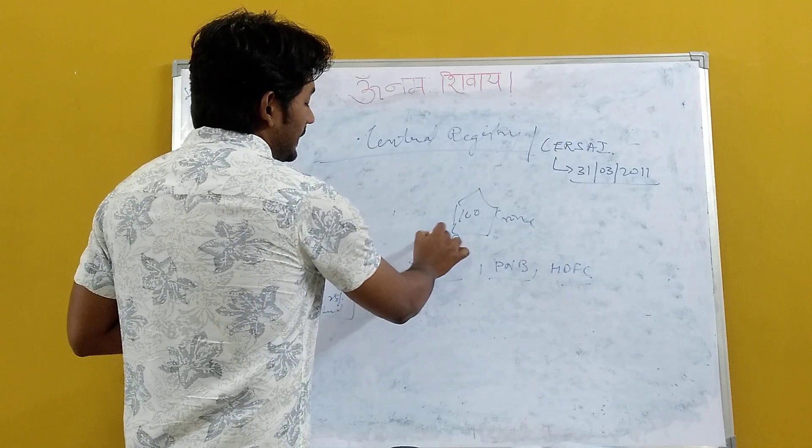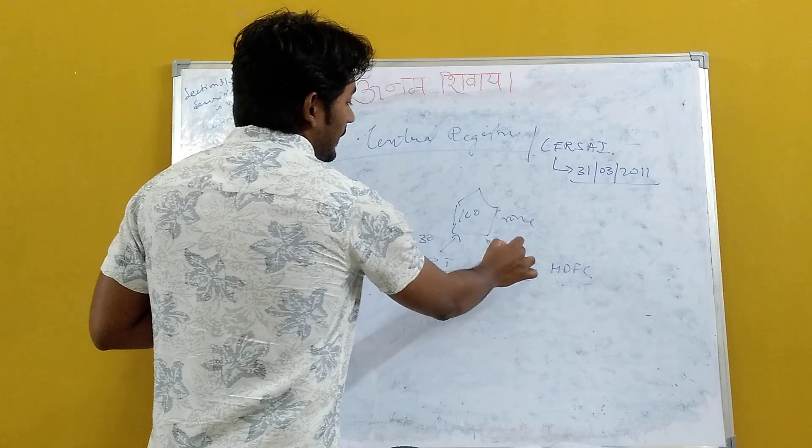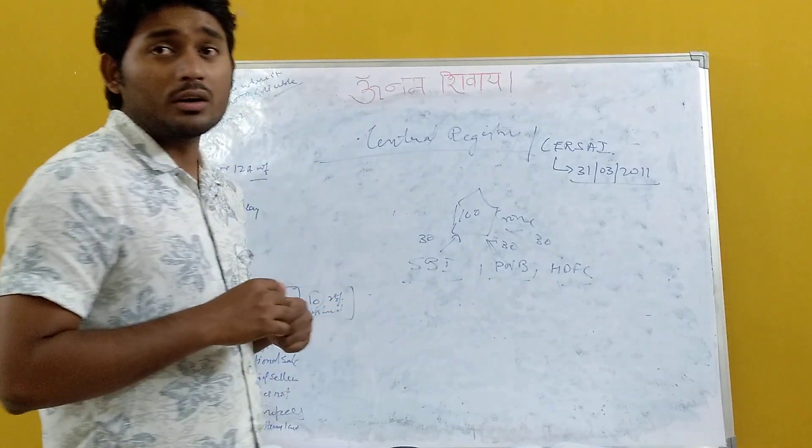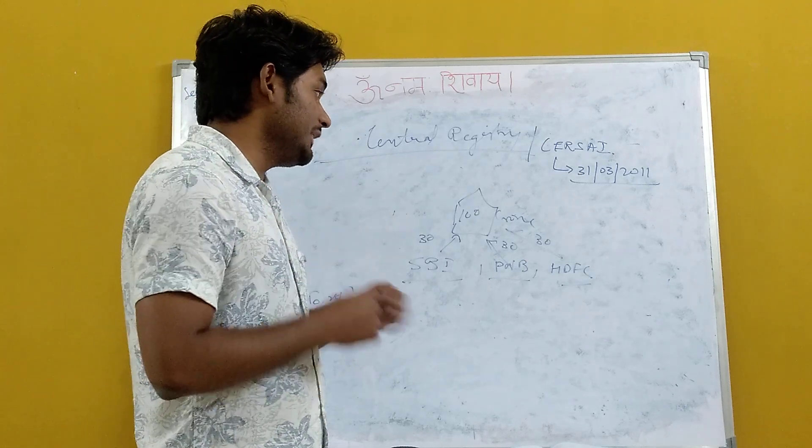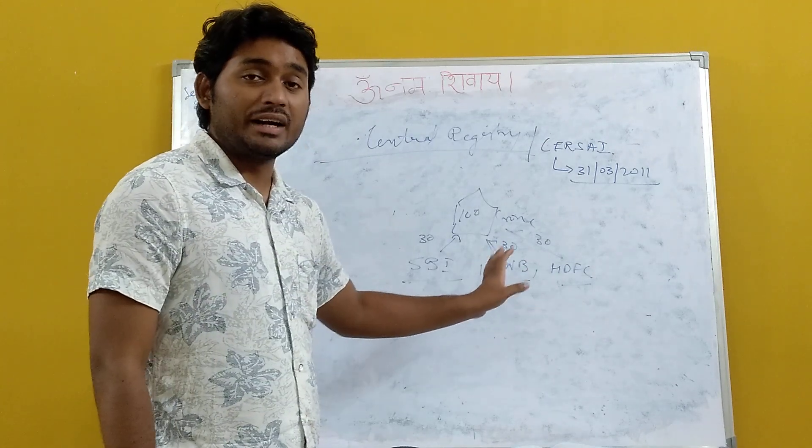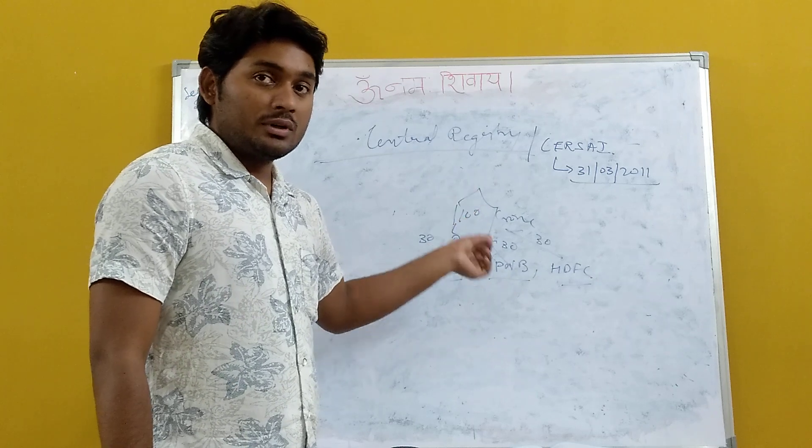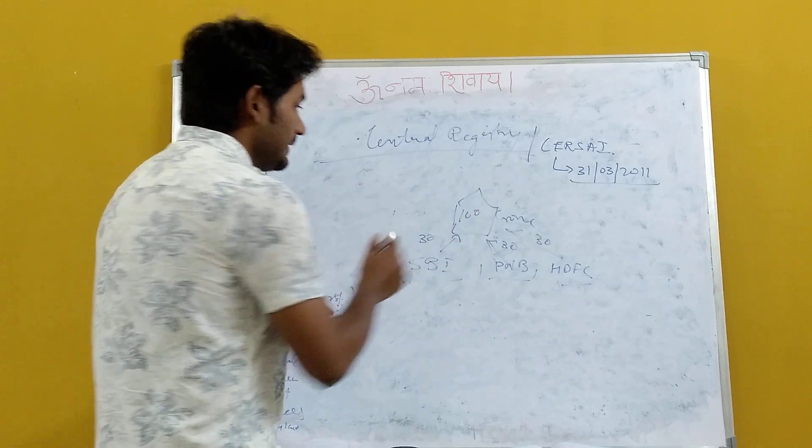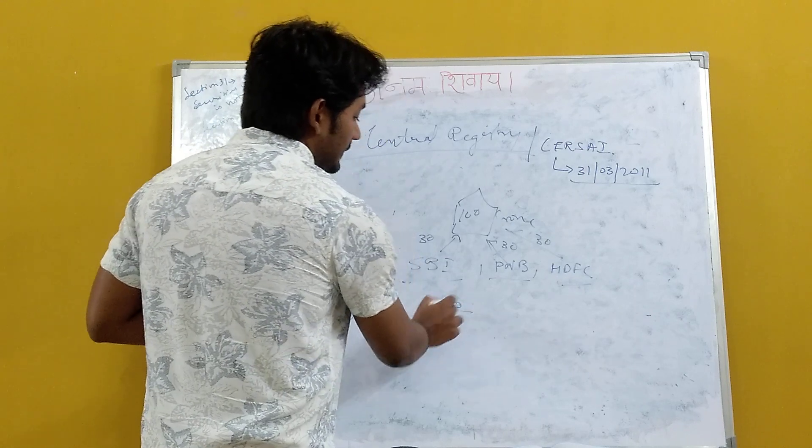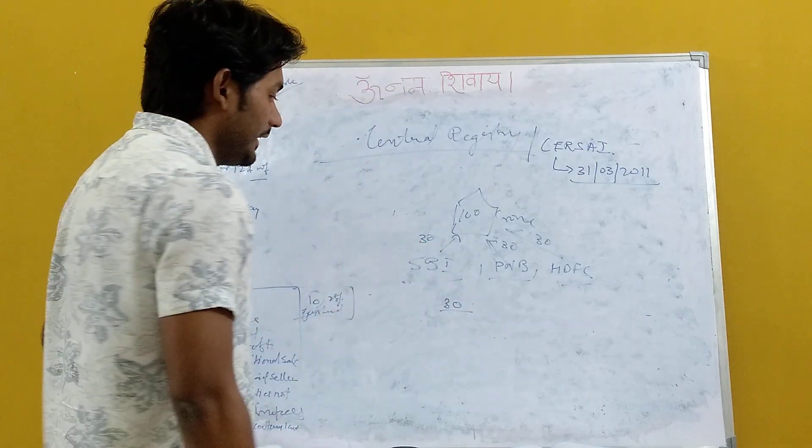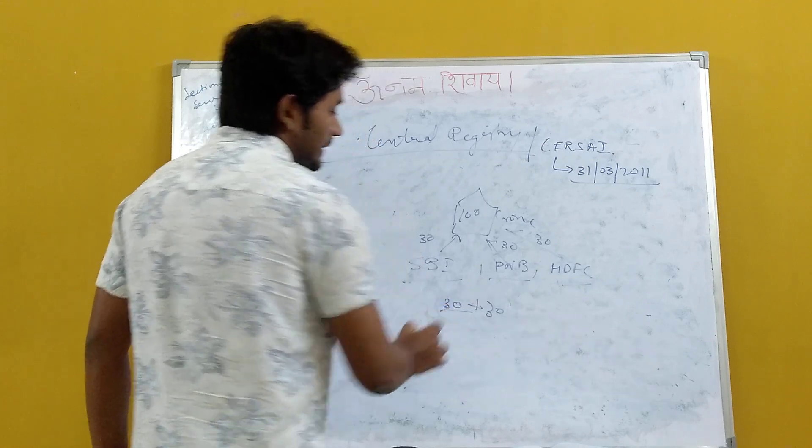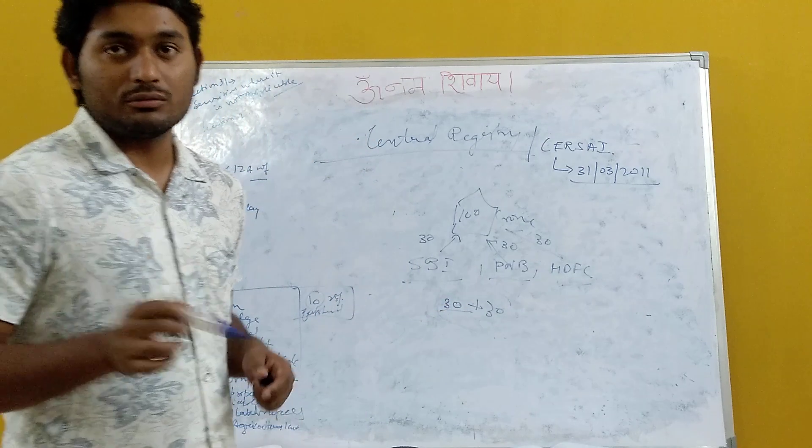The asset value is 100 crores. SBI has invested 30 crores, PNB has invested 30 crores, and HDFC has also invested 30 crores. So, for giving the SARFAESI Act notice, 60% of the outstanding amount banks should have. Suppose SBI is agreeing that I will send the SARFAESI Act notice, then SBI's share is 30 crores. Now, PNB is also agreeing, so it is 60 crores. Comprising SBI and PNB, it is 60% of the outstanding amount.